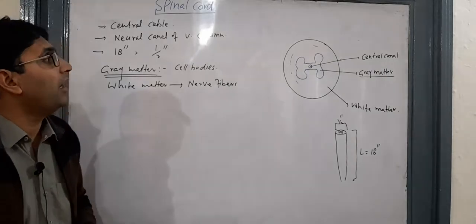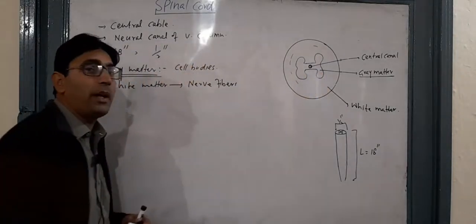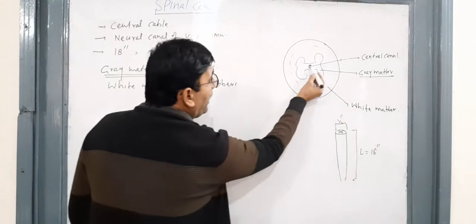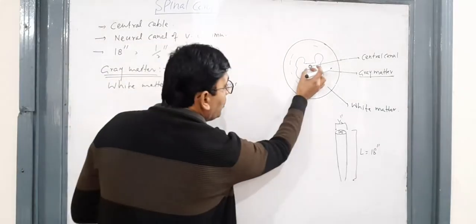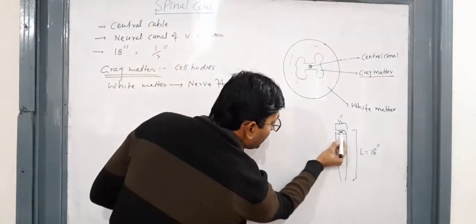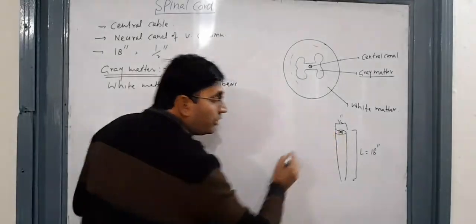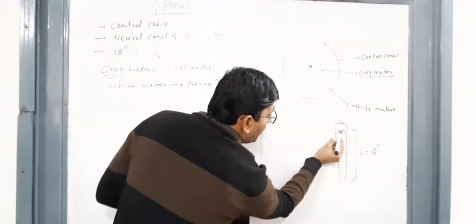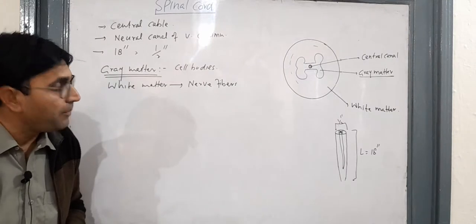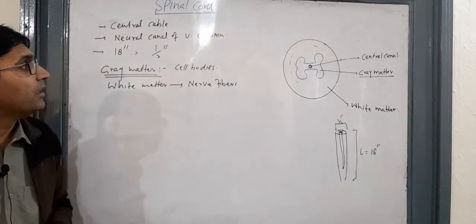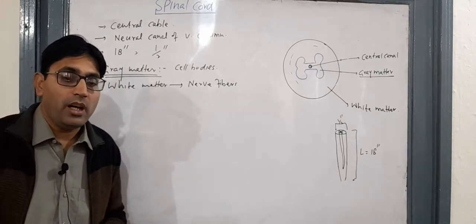The spinal cord has a central canal in its center. This central canal opens anteriorly into the cavities of the brain, and posteriorly it is blind — the posterior end is closed.